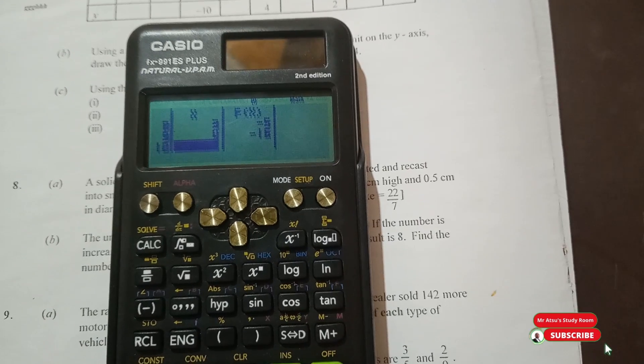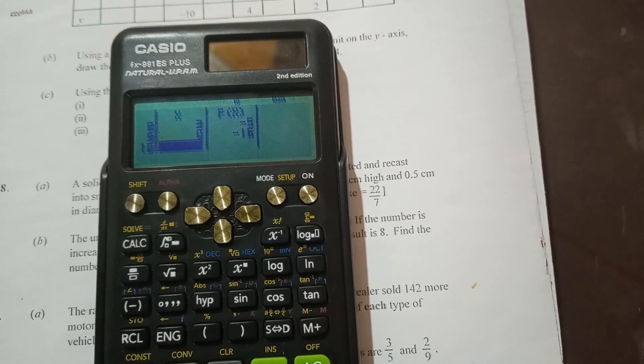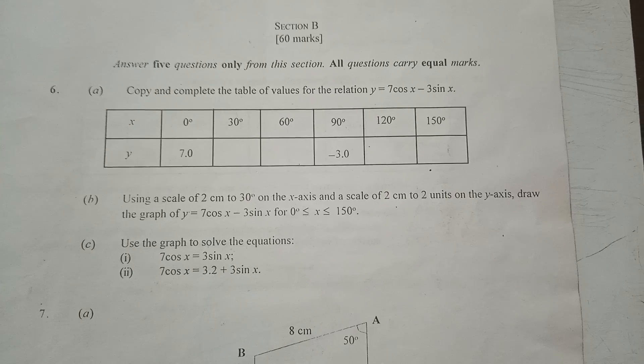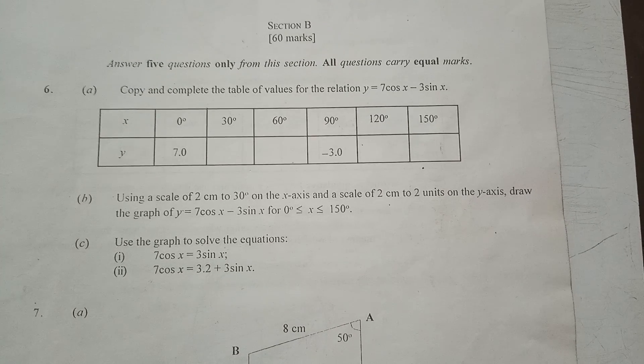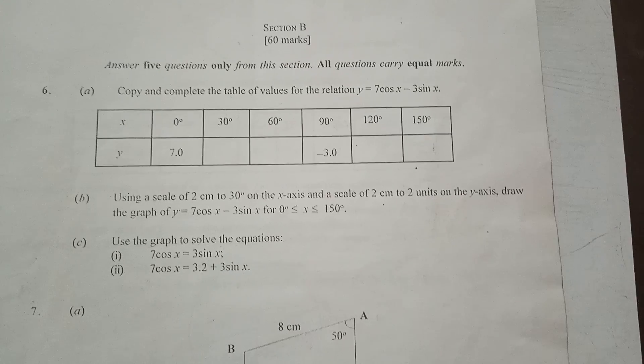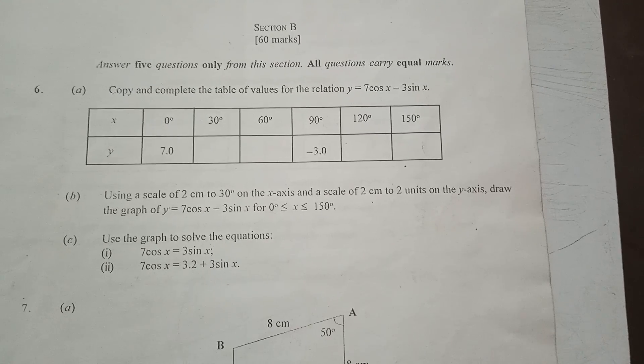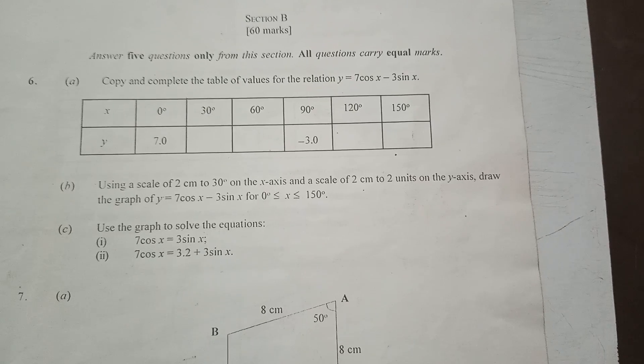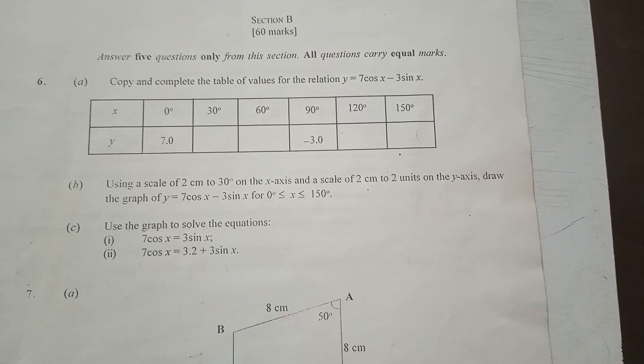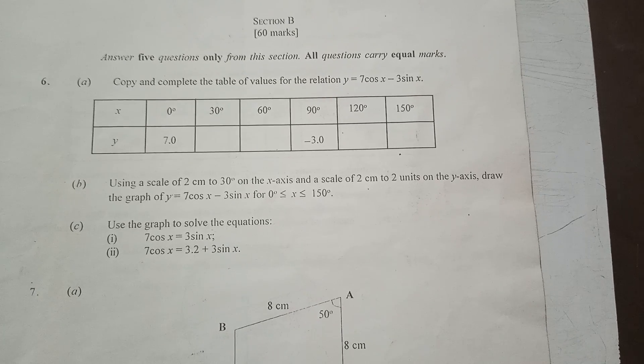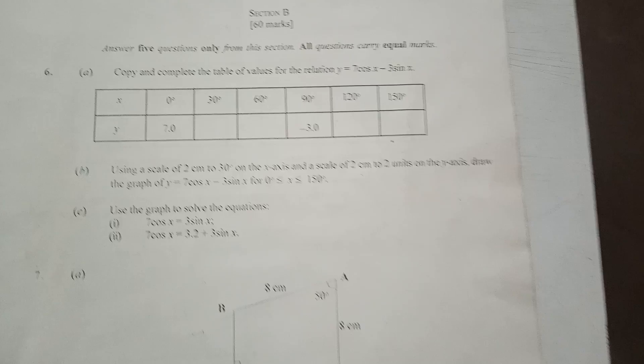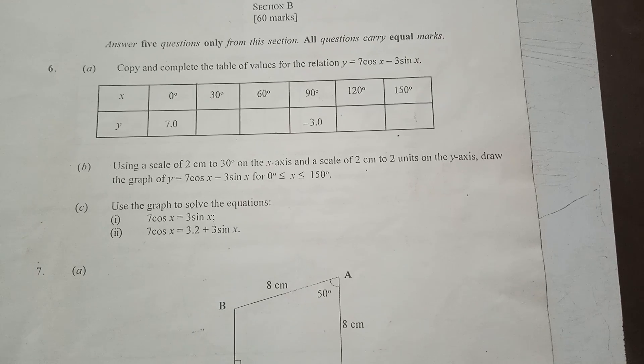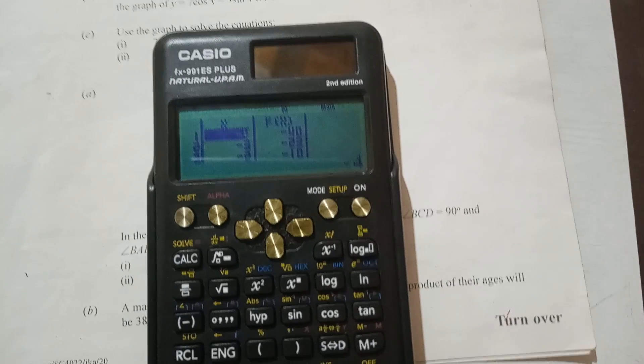Now let's quickly do that of a trigonometric function and take a question just like we did for the quadratic one. This is 1C 2020 general math paper, question 6. It says copy and complete the table of values for the relation y equals 7 cos x minus 3 sine x. The interval is down here. Using a scale of 2 cm to 30 degrees on the x-axis and 2 cm to 2 units on the y-axis, draw a graph of y equals 7 cos x minus 3 sine x for the interval 0 degrees less than or equal to x less than or equal to 150. But even if they didn't give this, we still have seen it in the table. So let's see how we use our calculator to solve this question. Just for us to familiarize ourselves with the process, I'm going to start all over again.